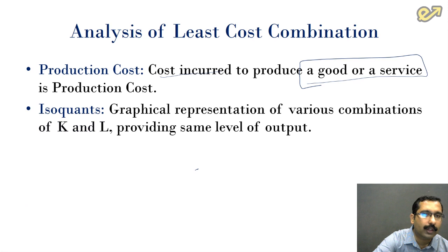The second factor that we have to know here is the isoquant. Isoquant is the graphical representation of various combinations of K and L. We know that the production function is simplified into a two-factor equation which looks something like this: Q is equal to function of capital comma labor.